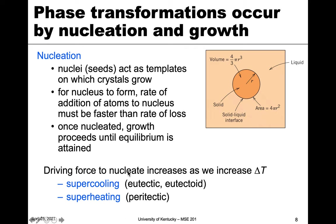This is supercooling, which we see with eutectic and eutectoid reactions. The converse phenomenon — superheating — can be tied to peritectic reactions, increasing temperatures to go from solid and liquid to solid at lower temperatures.